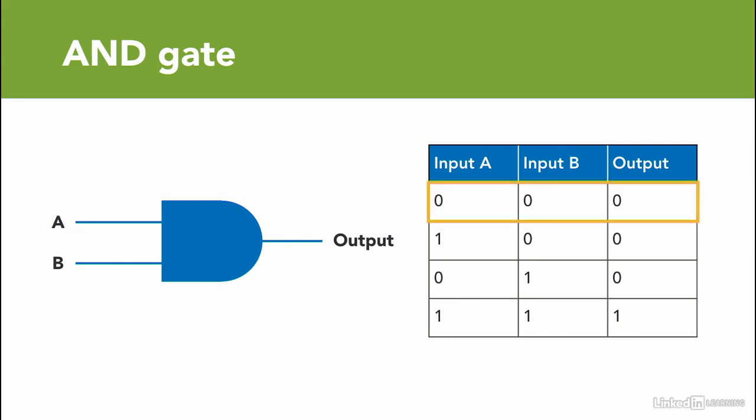So if both inputs are zero, output is zero. If one of the inputs is zero, the output is zero as well. The only time that the output is equal to one is when both inputs are one.